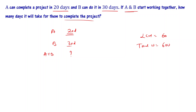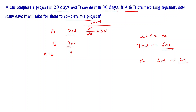A can complete 60 units in 20 days, so in 1 day A completes 60 divided by 20, which is 3 units. B completes 60 units in 30 days, so in 1 day B completes 60 by 30, which is 2 units. So A plus B together in 1 day do 3 plus 2, that is 5 units.